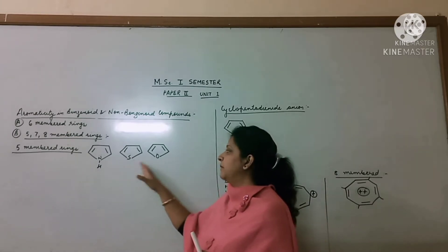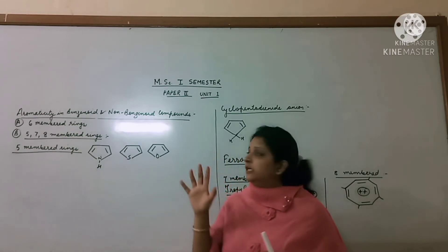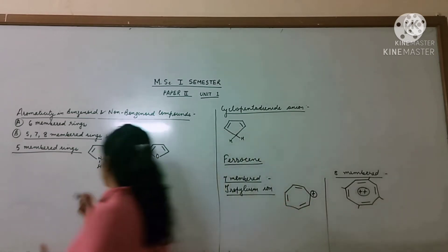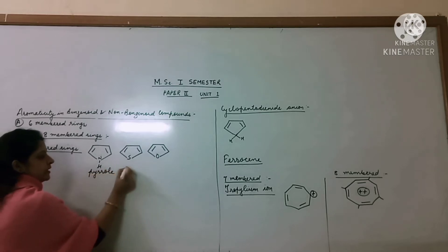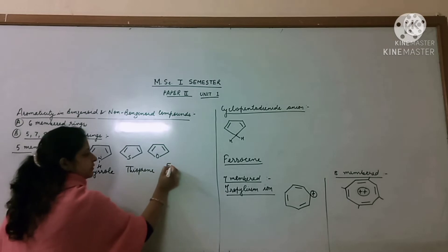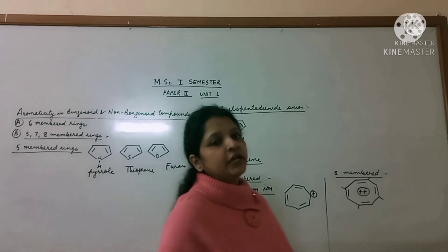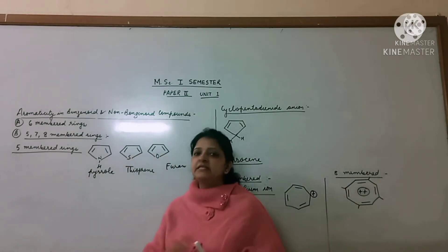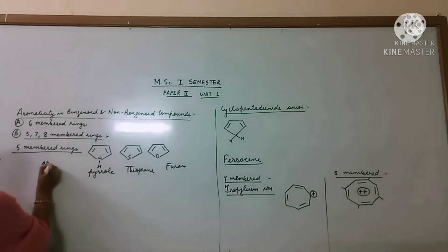In 5-membered rings, there are compounds in which 5 atoms are present. These are different structures. This is pyrrole, this is thiophene, and this is furan. These are all heterocyclic compounds and aromaticity is present in them. There is an aromatic sextet present in these molecules.